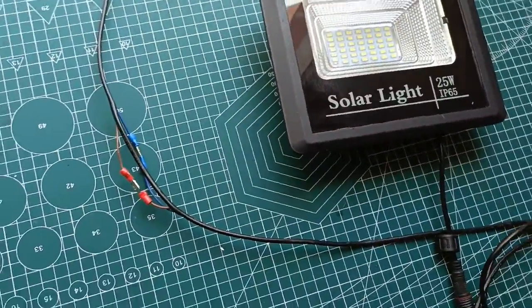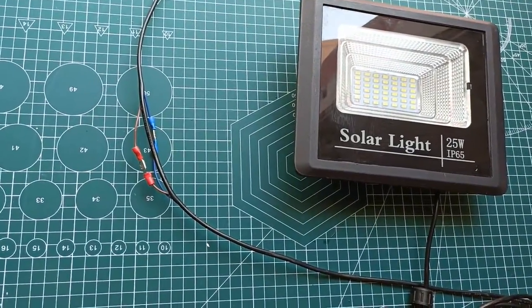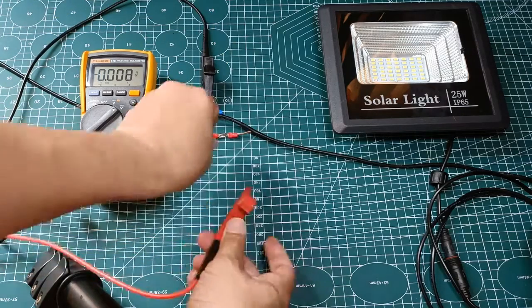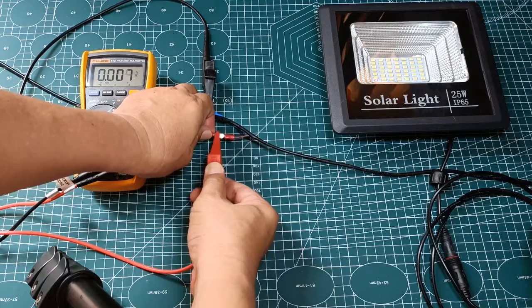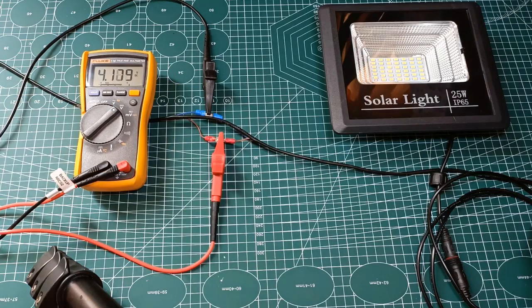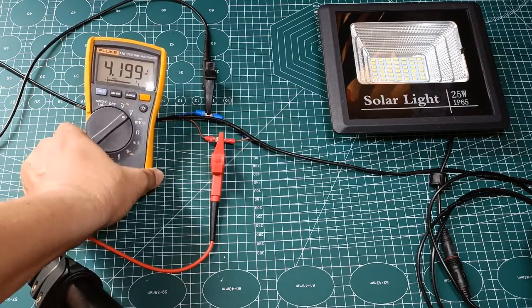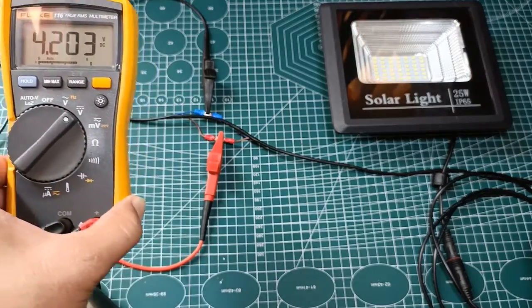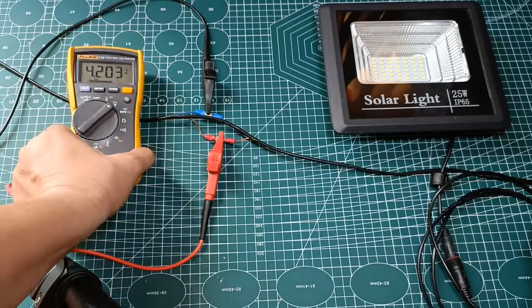This is the 25 watt solar light. The same setup, now I am connecting the Fluke 116 set to measure DC voltage and since the crimp connections are connected, I am measuring here the charging voltage of 4.2 volts. The solar panel is right now actually charging the solar light's battery.